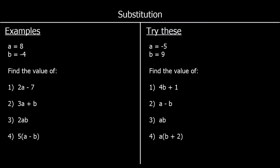Another set of questions. This time we've got a negative number, but apart from that we're doing the same thing. So we've got a as 8 and b as negative 4. So wherever we've got a, we're changing it to 8, and wherever we've got b, we're changing it into negative 4.